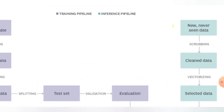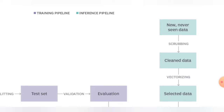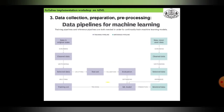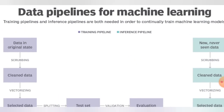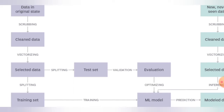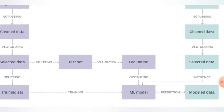In the green inference pipeline, new or never-seen data goes through the scrubbing process to be cleaned. The cleaned data is then vectorized, and the selected data is fed into the machine learning model for inference. The model then produces predictions. Both training and inference pipelines are needed to continue training machine learning models and to get the model outputs.